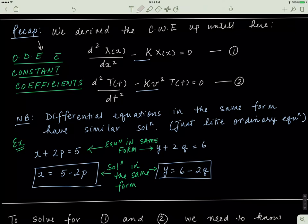This follows from ordinary algebra. If you have x + 2p = 5 and y + 2q = 6, when I solve them for x and y, I get answers in the same form — both numbers are just being subtracted from each other. The important thing is: when you have two equations in the same form, their answers are also in the same form.